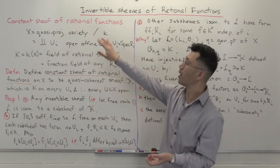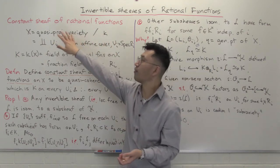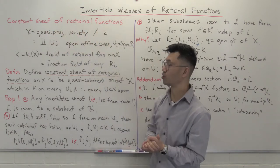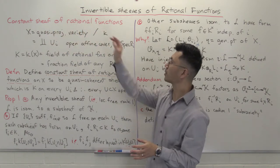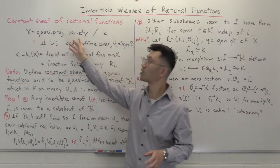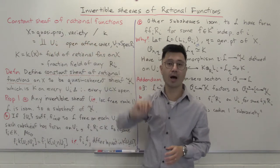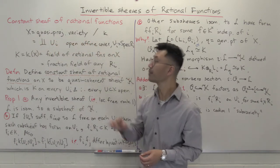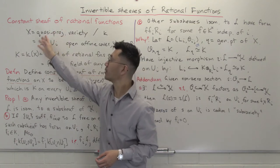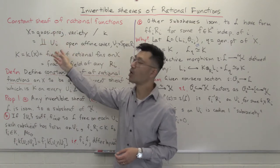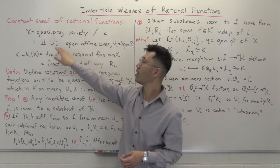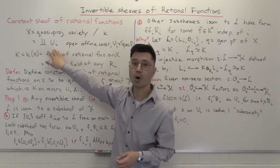So let's see how we do that by looking at firstly what's called the constant sheaf of rational functions. Our setup will be: X is some quasi-projective variety over an algebraically closed field k. And then, to look at coherent sheaves and quasi-coherent sheaves, we work with some open affine cover given by these U_i's.